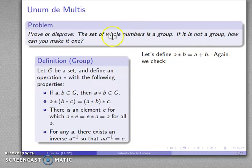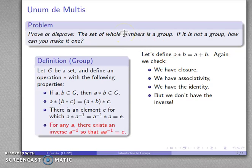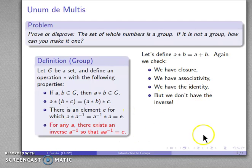Because we've changed our set, we have to go through all requirements again. Checking the whole numbers: we have closure (the sum of two whole numbers is a whole number), we have associativity, and we have the identity element — zero. However, we don't have an inverse. There's no whole number I can add to five to get zero, so the inverse element doesn't exist, meaning we have to change our set again.